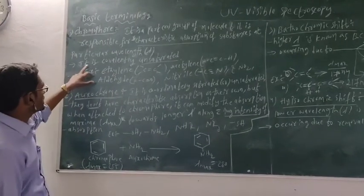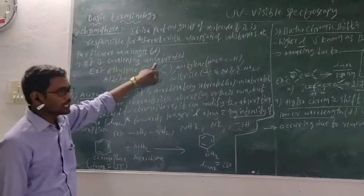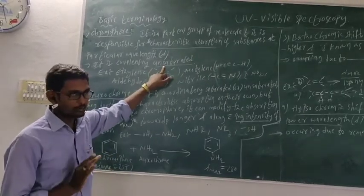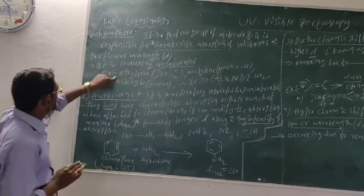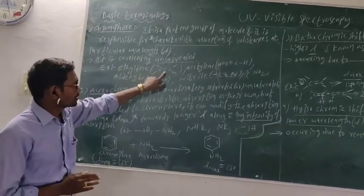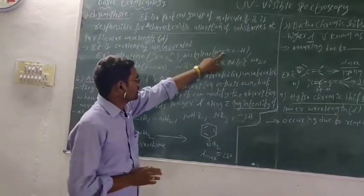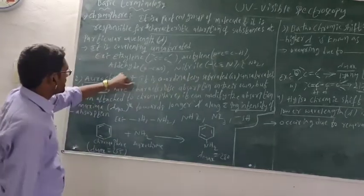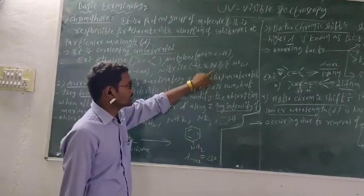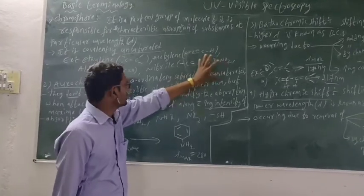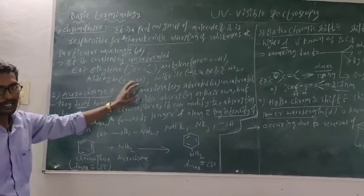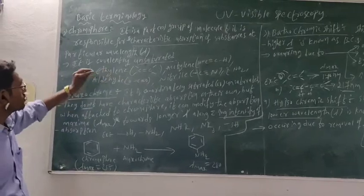Chromophores are called unsaturated — unsaturated means double bond-containing compounds. You can see the examples I have given on the board. Here, one double bond is there. In C=O, one double bond is there. In nitrile, a C≡N double bond is there. Nitrogen dioxide also. All these examples have double bonds, which means these are chromophores.